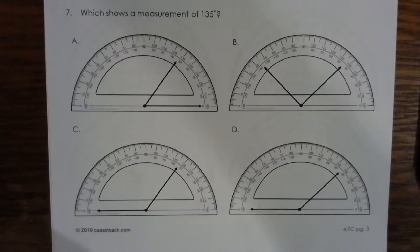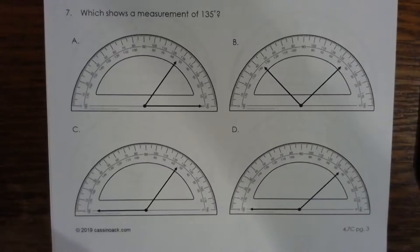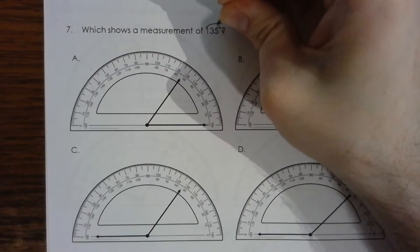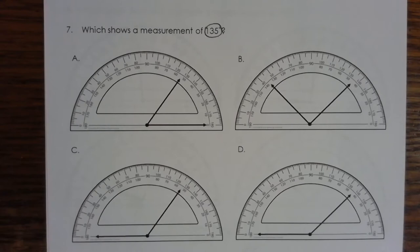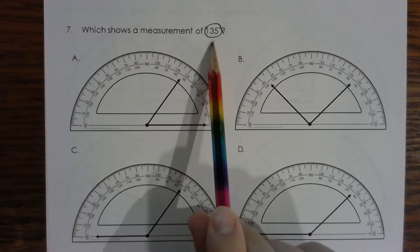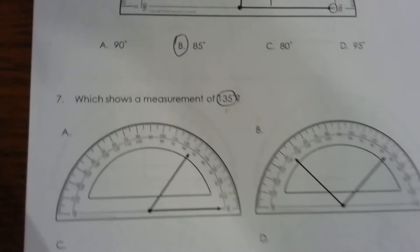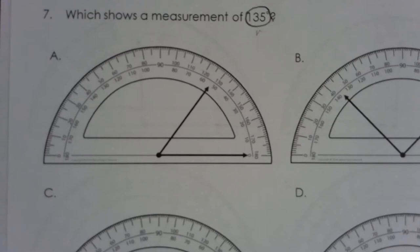Let's go ahead and look at the next problem. So this one is asking us which shows a measurement of 135 degrees. I'm going to show you how to solve this problem. What I would want to do is I'm going to find the degree of each of these, and then I'm matching with the answer. So let's start with A. I'm going to kind of zoom in. But again, this is why you probably want to be looking at your own electronic resource when you do this.